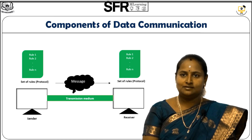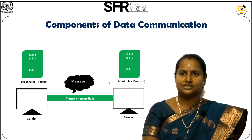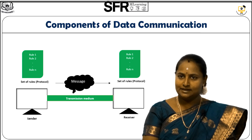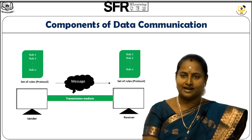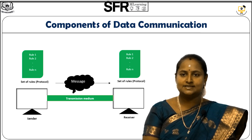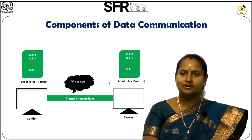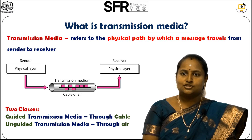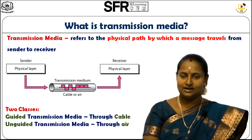Before moving to the topic, let us see some basic components of data communication. For every communication to occur in computer networks, we need 5 important components. The first one is message — communication means information sharing, so we need some message. The next two components are sender and receiver. The sender sends the message and the receiver receives it. The most important component for communication is transmission media, which represents the physical path by which a message travels from sender to receiver.